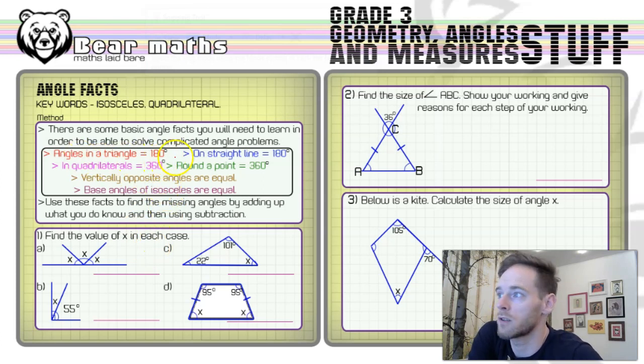Angles in a triangle, 180 degrees. On a straight line, 180 degrees. In quadrilaterals, 360. Round a point, 360. And then vertically opposite angles are equal. And base angles of isosceles are equal. So use these facts to find the missing angles by adding up what you do know, what you've given in the question, and then using subtraction from the particular number that you know, the angle fact that you've got in your head. So that's most of the time anyway.